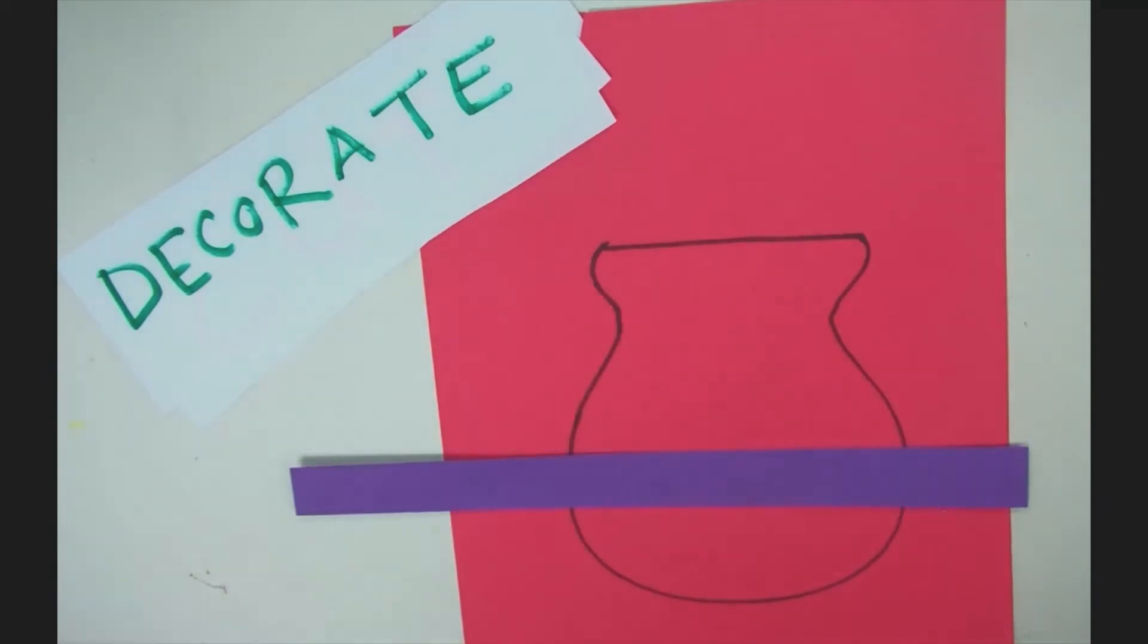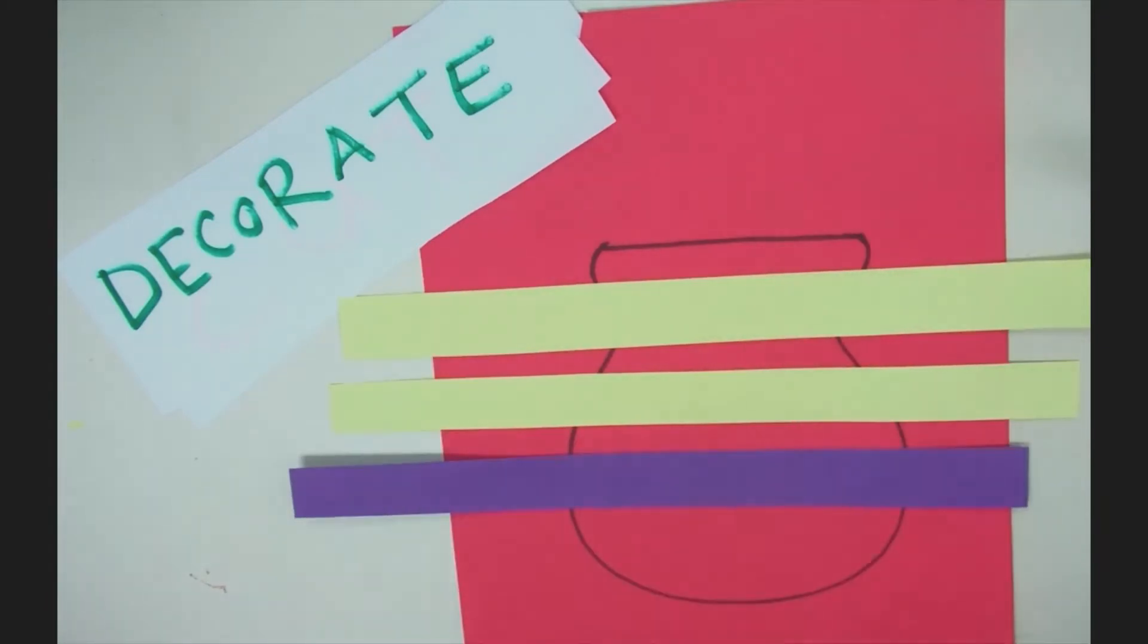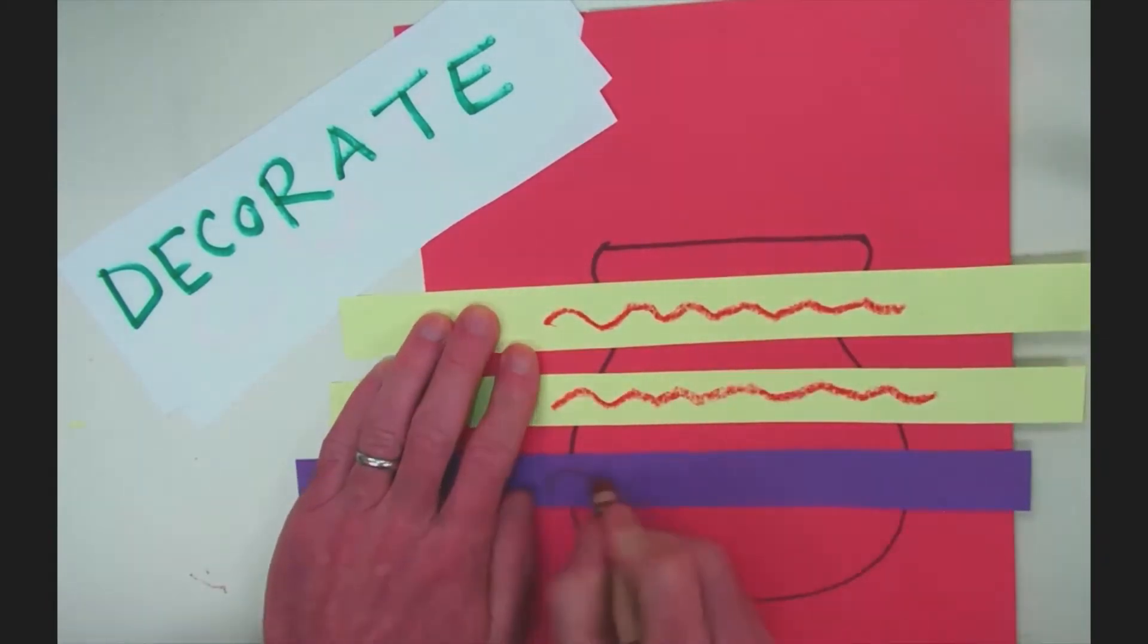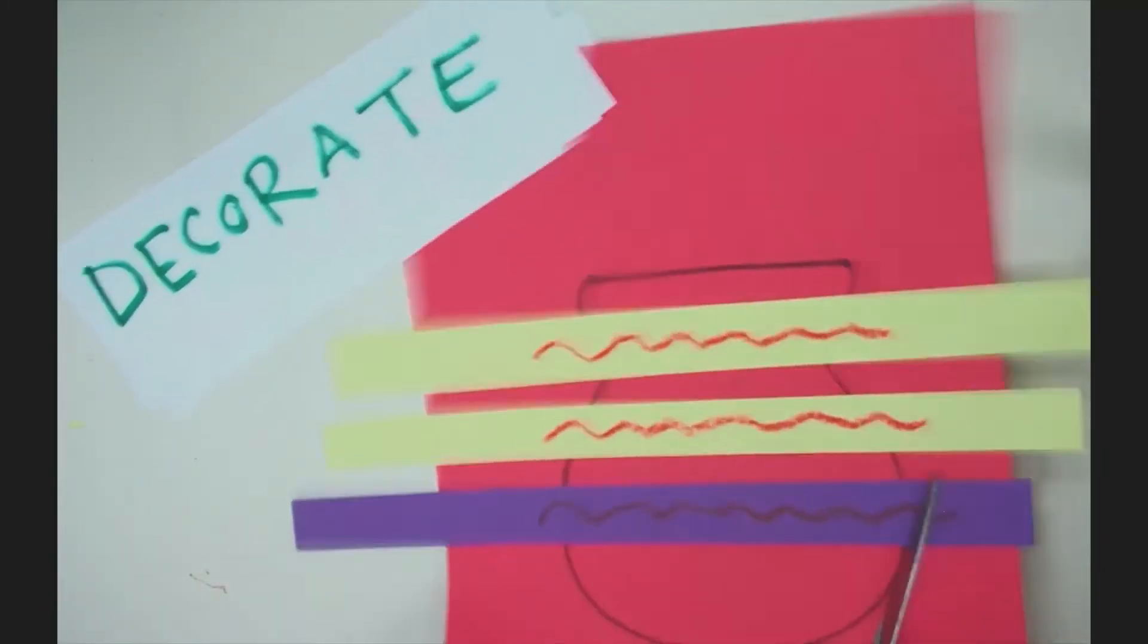First you'll need to draw and decorate the vase. If you have a tracer that will make it much easier. I decorated mine with strips of construction paper.